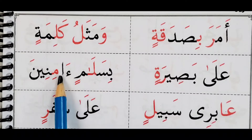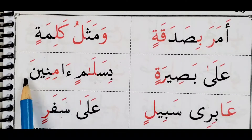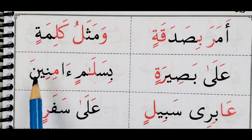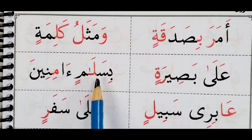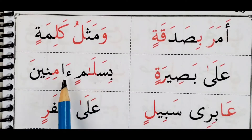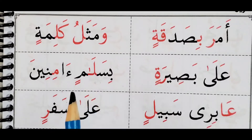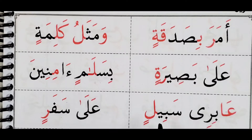Look at the hamza and there's an alif here — enda fatah. Aminina. Bi salamin aminina. Sabilin.